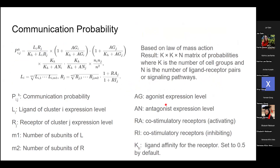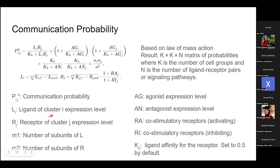Going on to communication probability — some math. This is based on the law of mass action. The communication probability P is between cluster I and cluster J. L_I is the ligand expression level of cluster I. If the ligand has multiple subunits, they take the geometric mean, where M1 is the number of subunits in L.